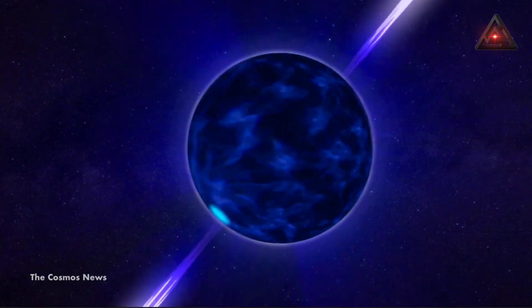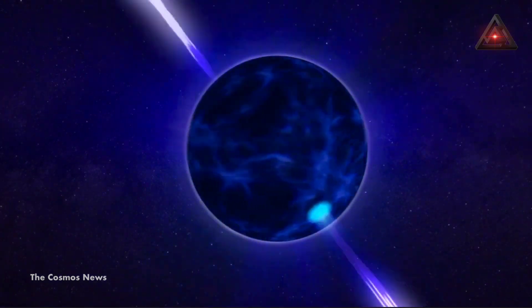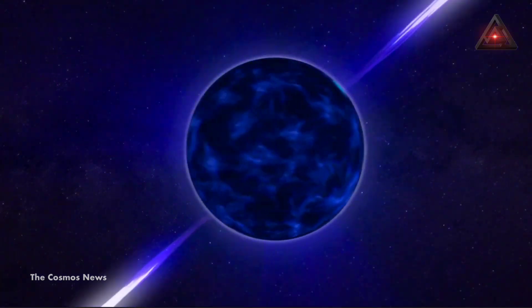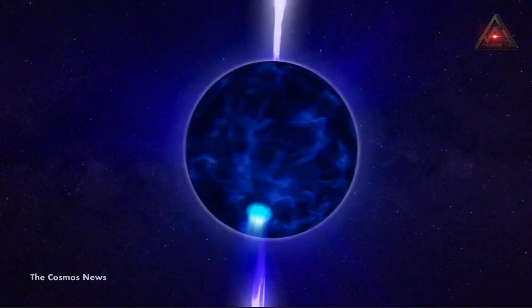Pulsars are rapidly rotating neutron stars with strong magnetic fields that generate radio jets at the magnetic poles. If their poles aren't pointed directly at Earth, we will only see those radio jets when they spin around to hit us, causing an incredibly consistent pulse.